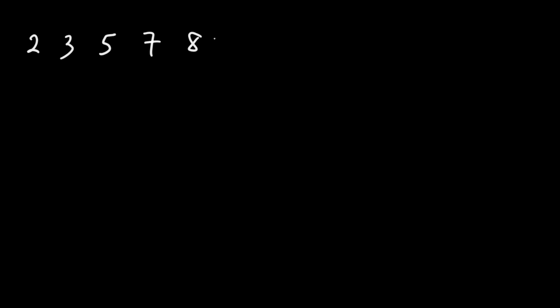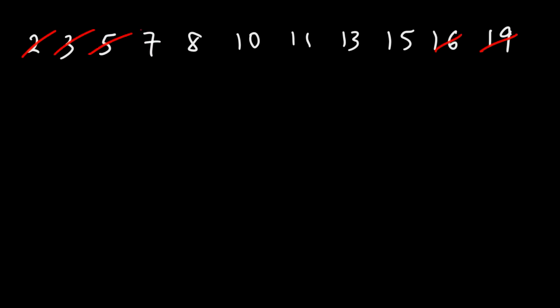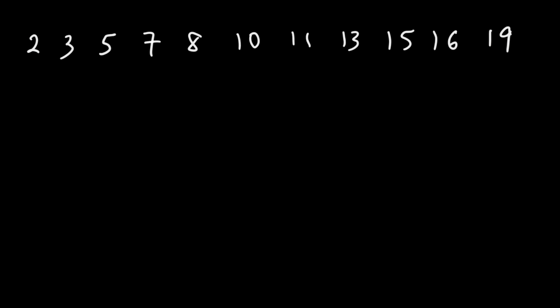Let's say we have the numbers 2, 3, 5, 7, 8, 10, 11, 13, 15, 16, and 19. How can we find the three quartiles in this list? The best thing to do is to find the second quartile first — it is the median of the entire data set. We eliminate from both ends until we get the middle number, which is 10. So 10 is our Q2 value, the median of the entire data set.